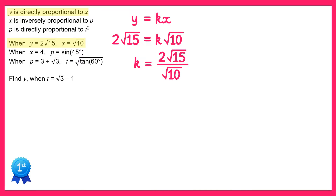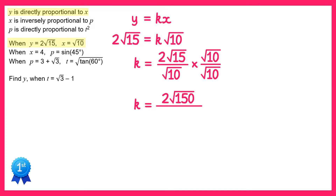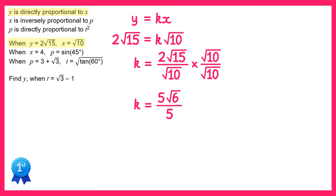We can simplify this — first let's multiply by root 10 over root 10 to rationalise the denominator. On the top this gives us 2 root 15 times root 10, which is 2 root 150, and on the bottom root 10 times root 10 is just 10. Now 2 over 10 simplifies to 1 over 5, and square root 150 equals square root 25 times square root 6, and square root 25 is 5, so it's 5 root 6. The 5s cancel out, leaving just root 6.